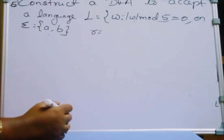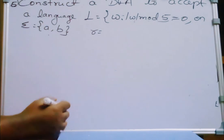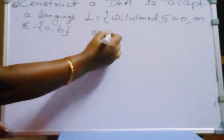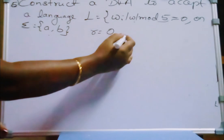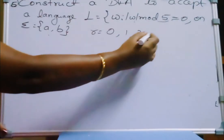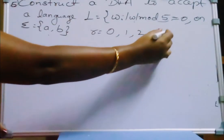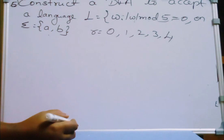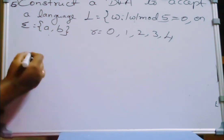To identify the number of states of the DFA, we first write the remainders of 5. The possible remainders of 5 are 0, 1, 2, 3, and 4. This means the automata has 5 different states, starting from Q0 to Q4.